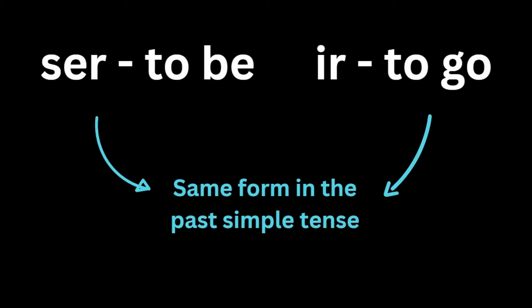Spanish has the verbs ser and ir which mean to be and to go. Even though these verbs have different definitions, the convenient thing about them is that they both share the same syntax when they're put in the past simple or preterite tense in Spanish.